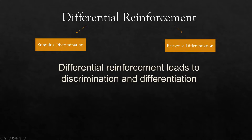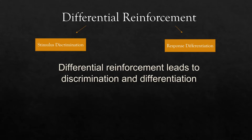We often refer to it as discrimination and differentiation, but a good way to remember the difference is to use the technical terms. Technically, discrimination is called stimulus discrimination and differentiation is called response differentiation. The word is right in the term — if we're talking about discrimination, we know we're talking about stimuli. If we're talking about differentiation, we know we're talking about responses.